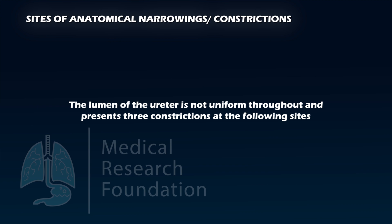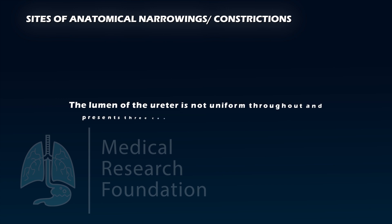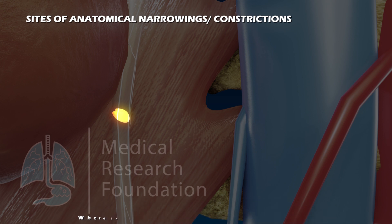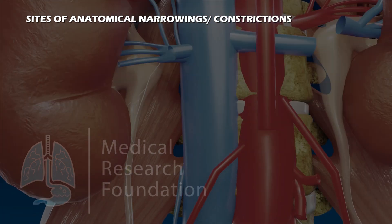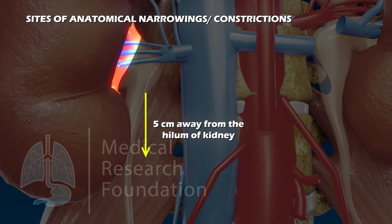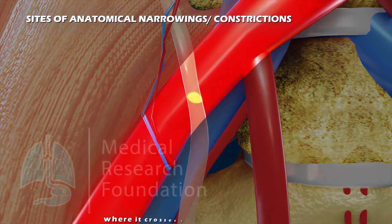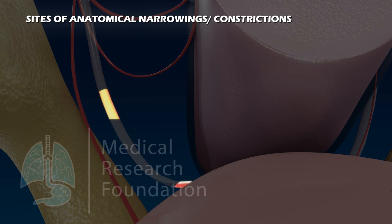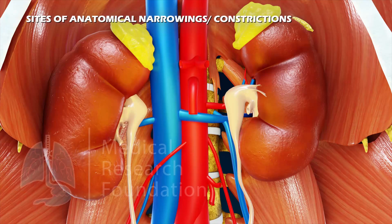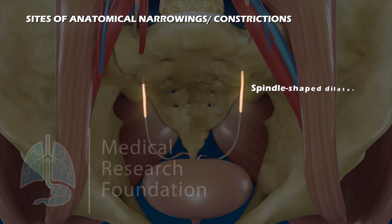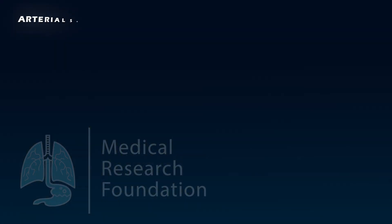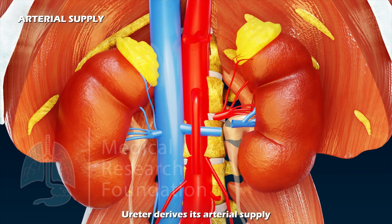The lumen of the ureter is not uniform throughout and presents three constrictions: at the pelvi-ureteric junction where the renal pelvis joins the upper end of the ureter (approximately five centimeters from the hilum of the kidney); at the pelvic brim where it crosses the common iliac artery; and at the uretero-vesical junction where the ureter enters the bladder. Portions between these constrictions show spindle-shaped dilatations, and these constricted segments are sites of arrest of ureteric calculi.